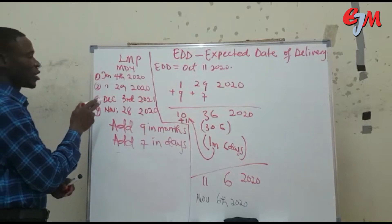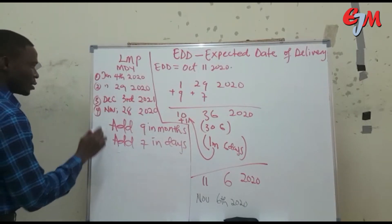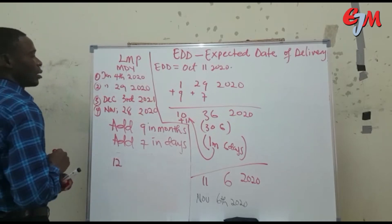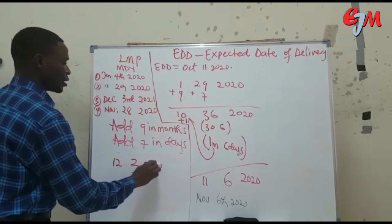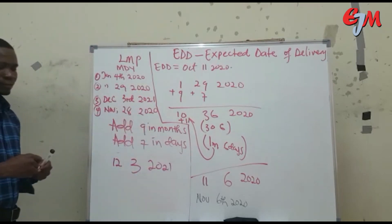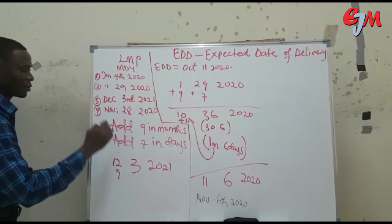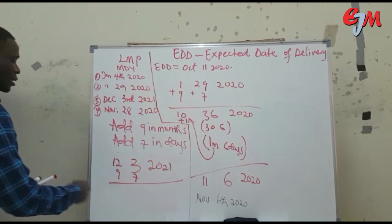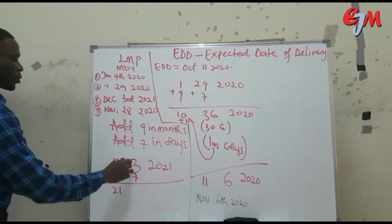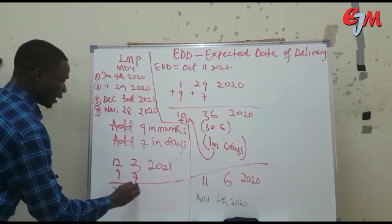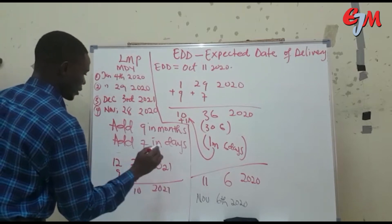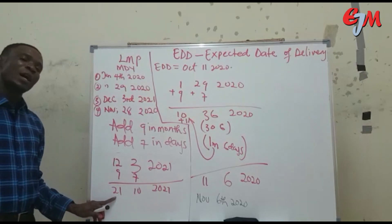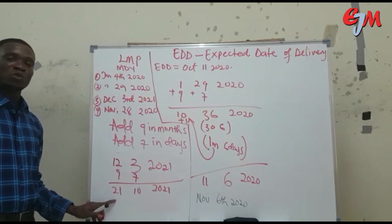Now for the third person: the first day of her last menstrual period was December 12th, 2021 — that is month 12, day 3, year 2021. Add 9 months and add 7 days. Month 12 plus 9 gives you 21, and day 3 plus 7 gives you 10, year 2021. Now 21 months is more than a year, so we need to split it.